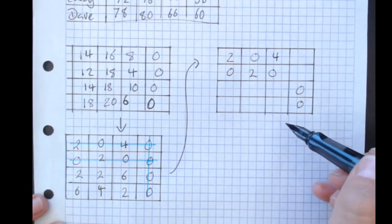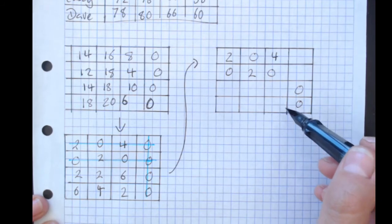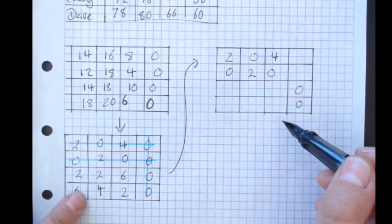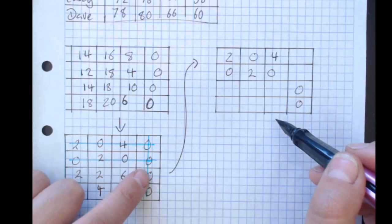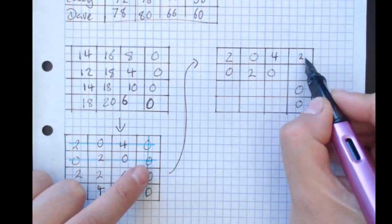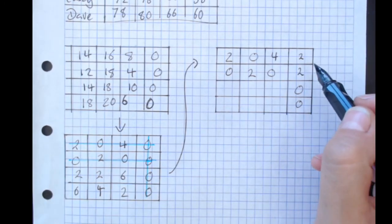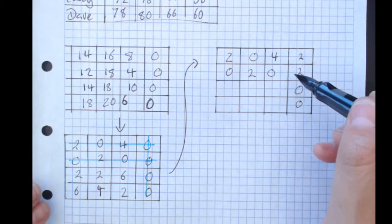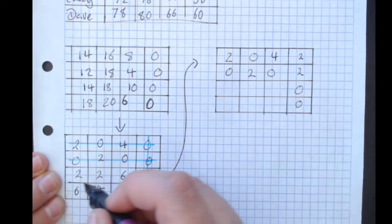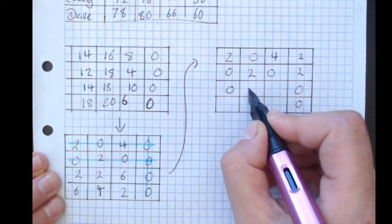So those are the ones that are staying the same because they're only crossed by one line. I'm going to add the lowest uncovered value of two to the spot where there's two crosses. And I'm going to subtract the lowest value from all the uncovered numbers.